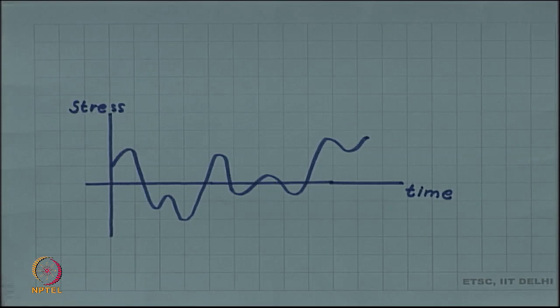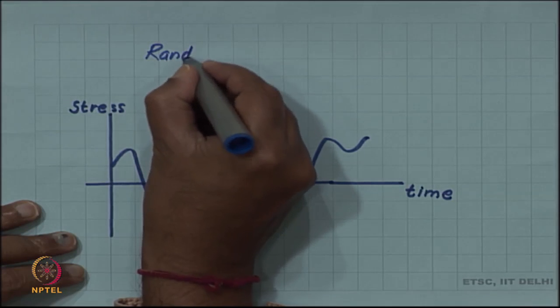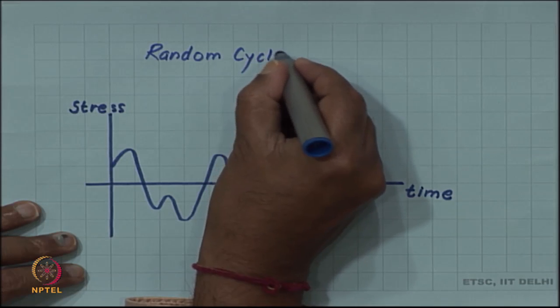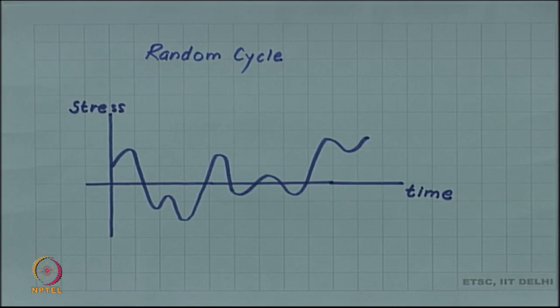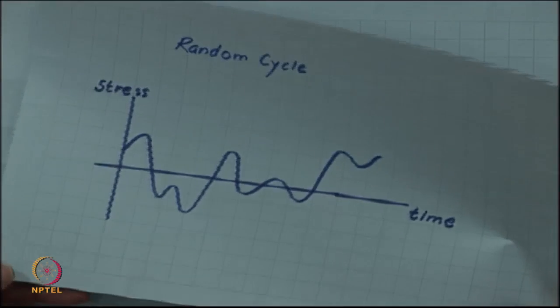We can also have random cycle shown here, which is not defined as a single sinusoidal but has several maxima and minima varying over time.